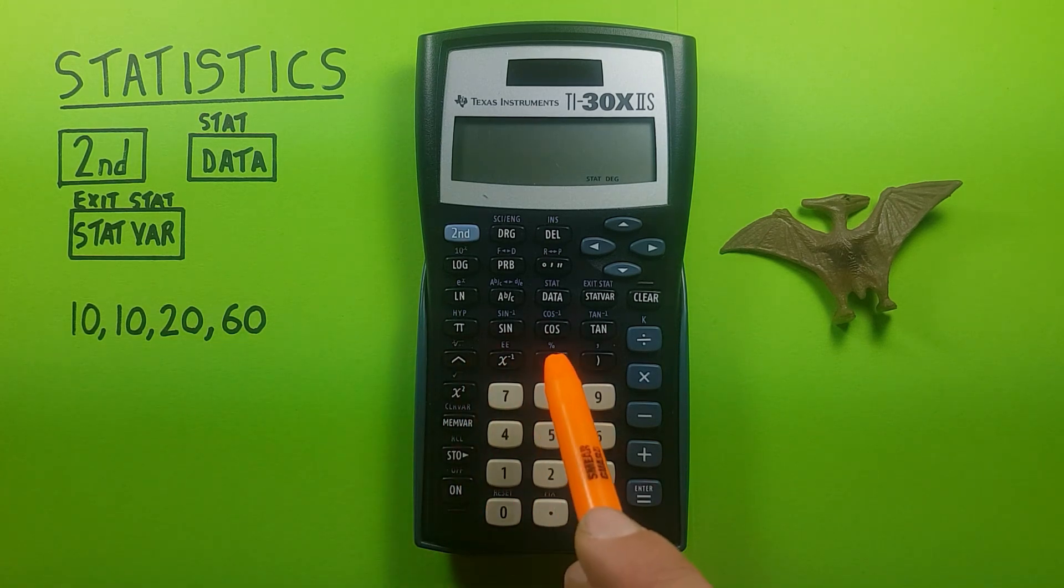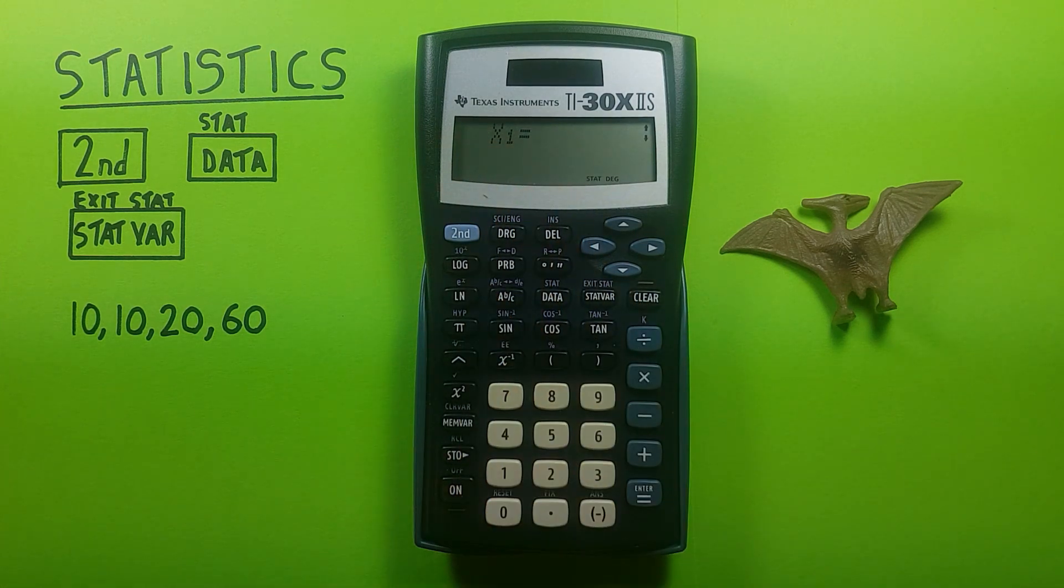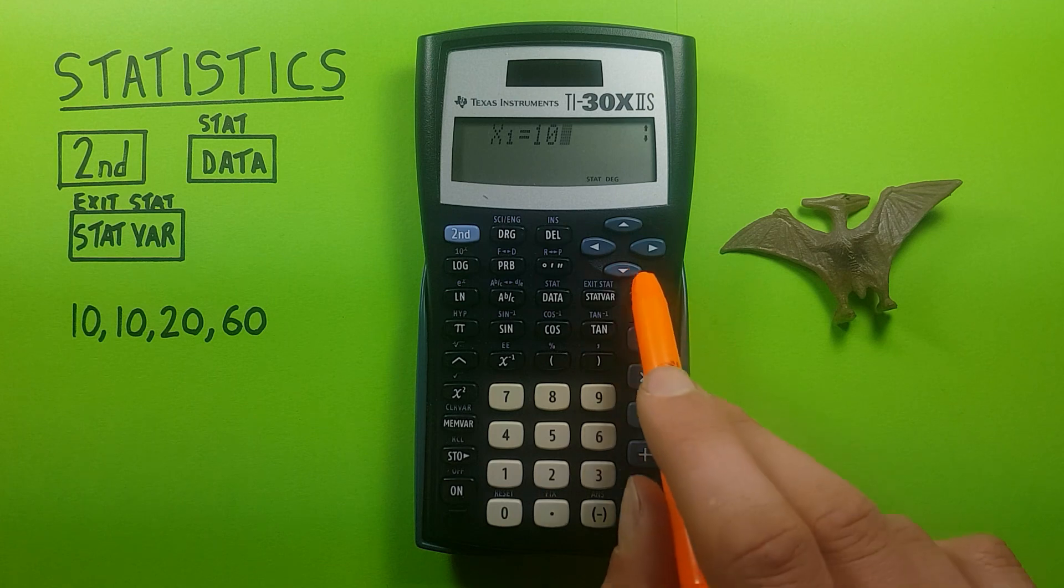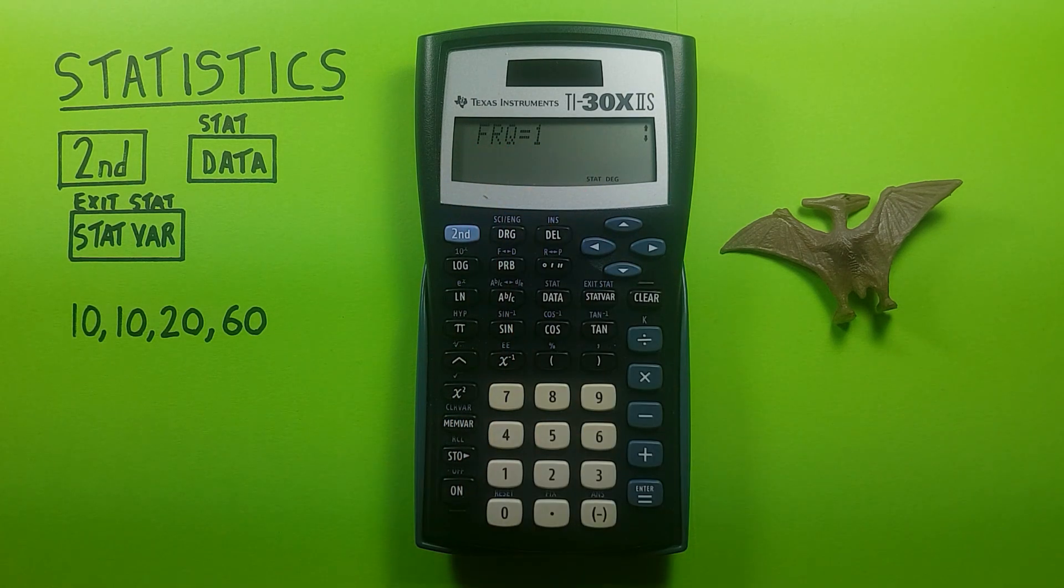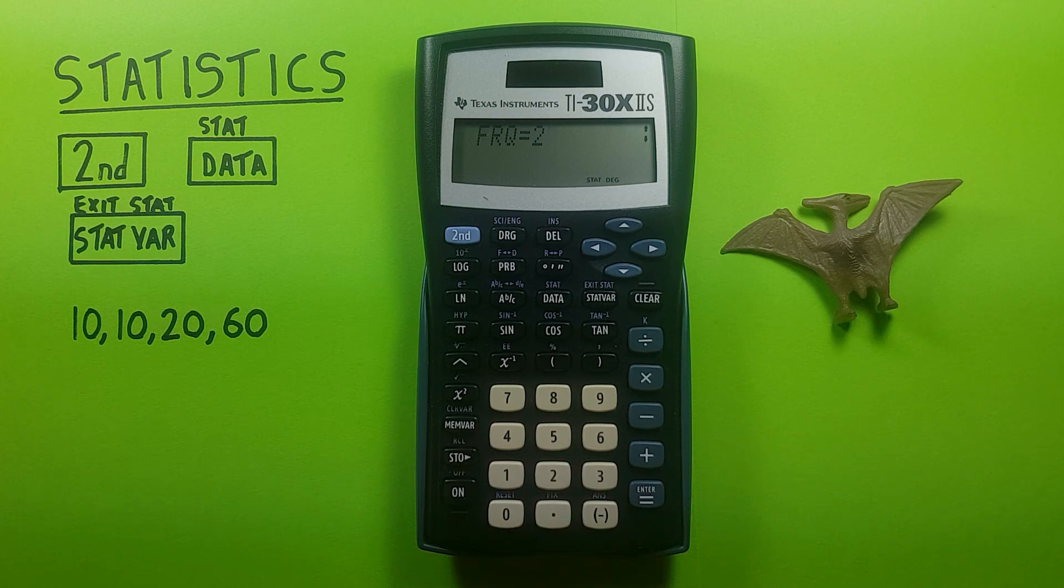So to start entering this data we have the data key. We now see x1 equals. This is asking for our first piece of data. Well our first one is 10 so we enter that and then press the down key and now we see frq equals 1. This is asking for the frequency of that piece of data or how many times it occurs in the data set. Since our 10 occurs twice, we can change the frequency to 2. This way we don't have to enter the 10 multiple times.